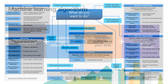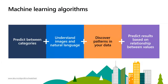We basically have four categories: predicting between categories, understanding images and natural language, discovering patterns in data, and predicting results based on relationships between values. There are pretty colors and cute boxes, which seems simple — but the words are still complicated to me, so let's go into some examples of these.